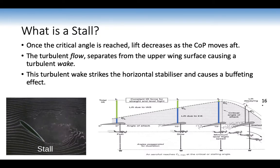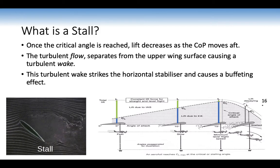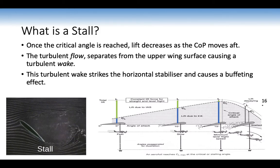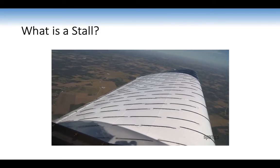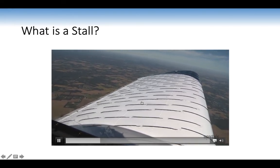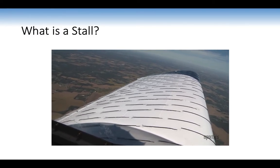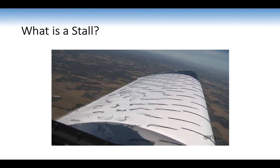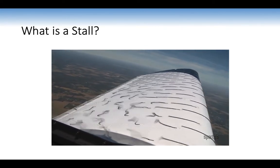For the Piper Cherokee, we'll be practising stalls quite high up — about three and a half to four thousand feet — so we've got plenty of height to recover. Normally we can't see the airflow on the wing, but using pieces of string we can see the laminar flow transform into turbulent flow and then into a turbulent wake, as shown in this animation.